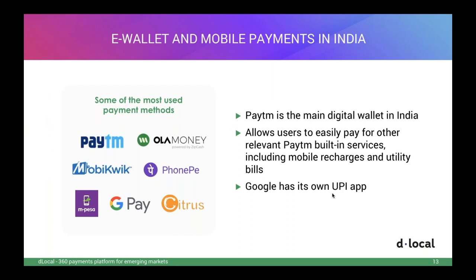On e-wallets: Paytm is the main digital wallet, with many others such as Google Pay, PhonePay, and M-Pesa. As Paytm consolidated itself as the winner, we are also seeing a shift toward UPI, with Google Pay and PhonePay detaching themselves from the rest of the herd. Going forward with UPI, this is making not only a ubiquitous payment system but also getting users on board, changing the payments landscape for e-commerce.